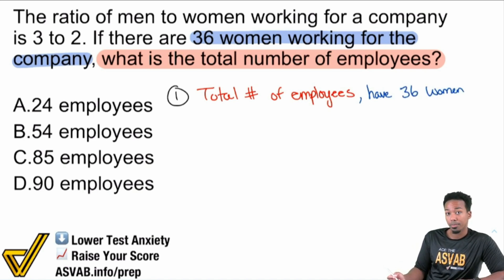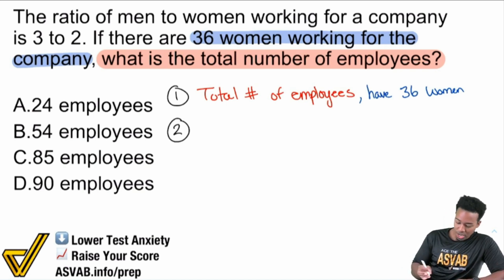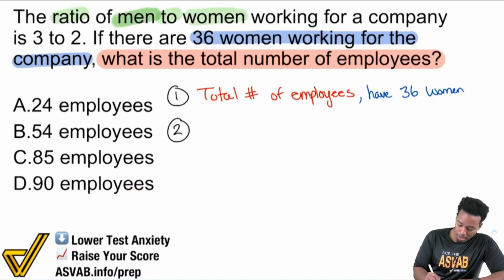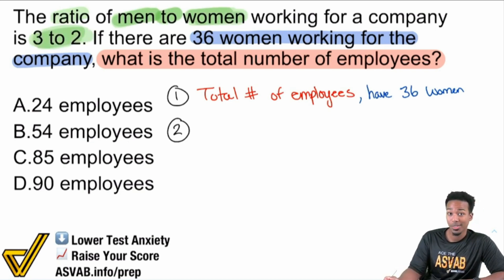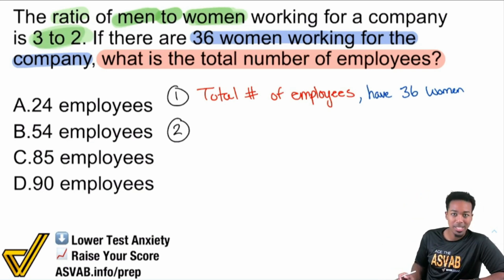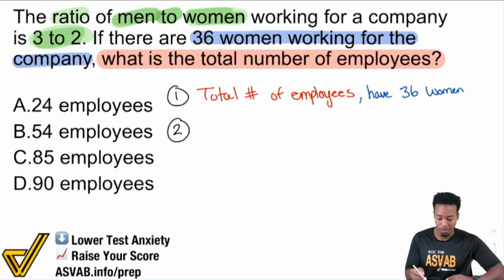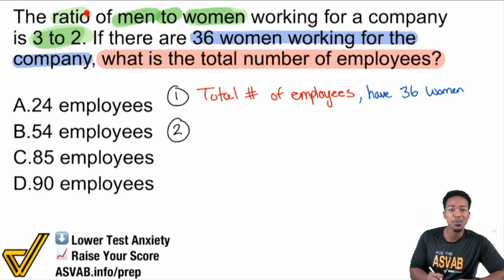Another piece of information we have to write down — step two: write down all your given information. What we see here is the ratio of men to women is 3 to 2. That's way too important. The ratio of men to women is 3 to 2. And the keyword 'ratio' right there is a dead giveaway that this is a proportion problem.